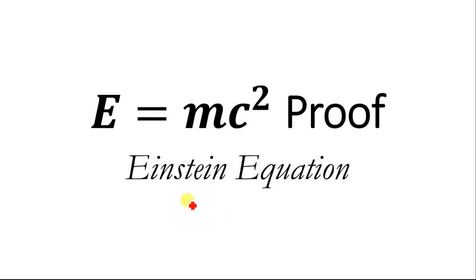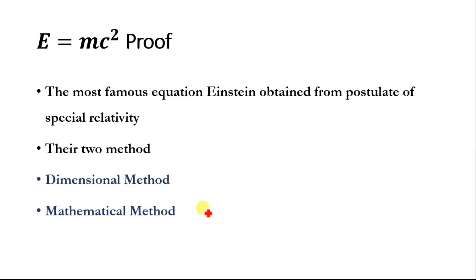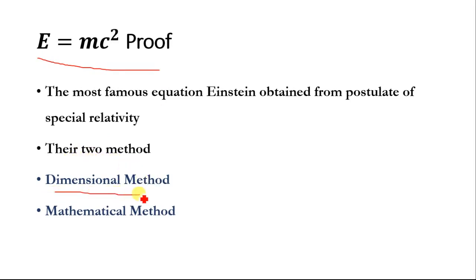In our today's video lecture, we will prove the Einstein equation which is E is equal to mc square. This is one of the most famous equations of physics and was obtained by Einstein from the postulates of special theory of relativity. There are two methods to derive this equation: one is the dimensional method while the other is the mathematical method. We will use these two methods to derive this equation.